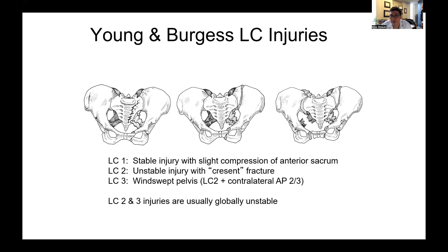LC3 injuries are a windswept pattern where one side of the pelvis gets pushed in and has either an LC1 or an LC2 pattern, whereas the contralateral side has an APC pattern and was actually pushed over. These are particularly nasty injuries that require urgent attention.